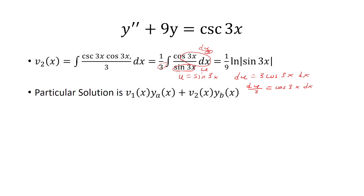So now we just put everything together, and so the particular solution is -1/3 x times cosine 3x plus 1/9 ln of sine 3x times sine 3x.